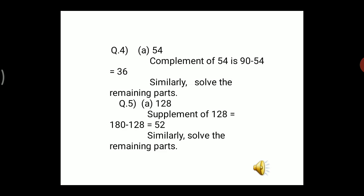Question 5: write the supplements of the following angles. Two angles are supplementary when their sum is 180°. Part a is 128°. The supplement of 128° is 180° − 128° = 52°. Therefore, 52° is the supplement of 128°. Follow the same method for the remaining parts.